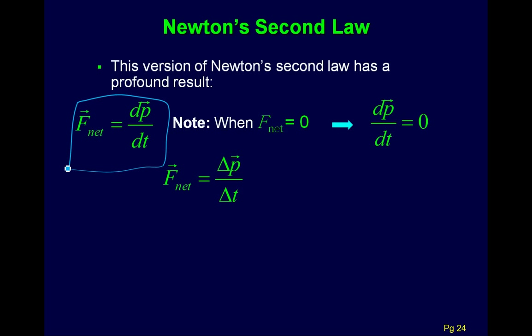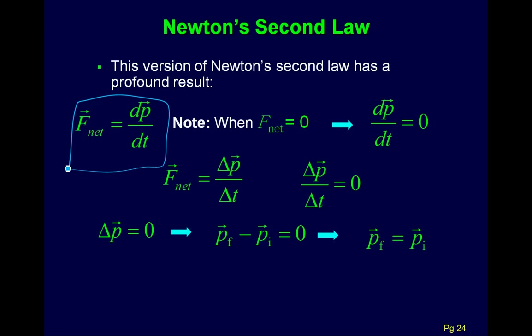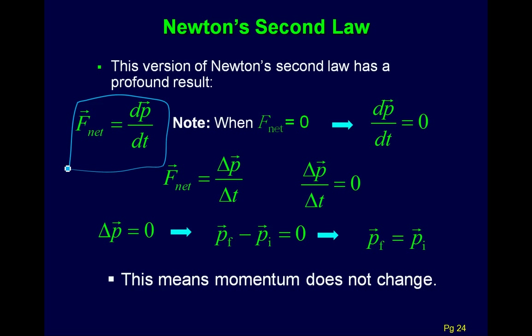Another way to think about this, which can be handy, is to write the derivative as ΔP over ΔT. If that equals zero, then you can also see that ΔP equals zero, which means P_final minus P_initial equals zero, which implies they have to be the same thing. So whenever the net force is zero, momentum does not change, and we say that momentum is conserved.